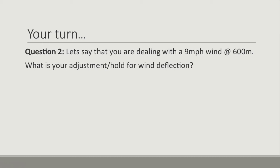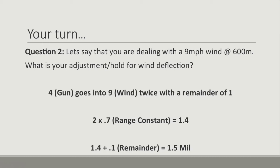Question two: you're dealing with a 9 mile-per-hour wind at 600 meters. What is your adjustment or hold for wind deflection? Pause the video, run through the formula, and check your answer against mine. Four gun goes into nine twice with a remainder of one. Two multiplied by our range constant for 600 meters — which we know is 0.7 — equals 1.4. We take our 1.4 and add our remainder of 0.1, which gives us an answer of 1.5 mils.